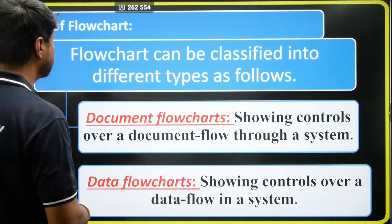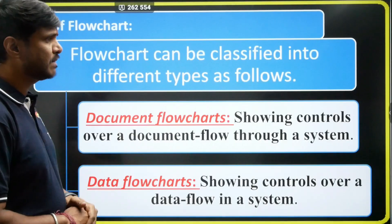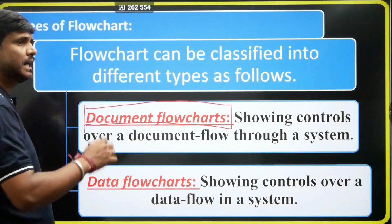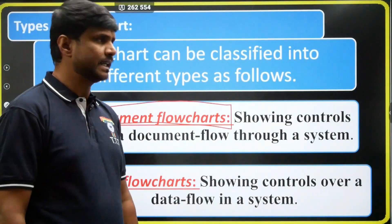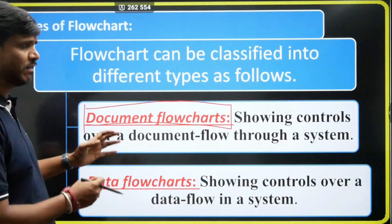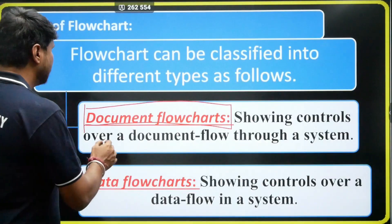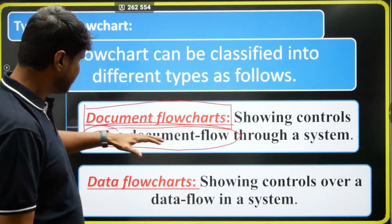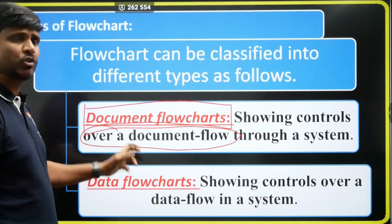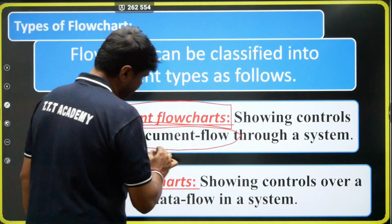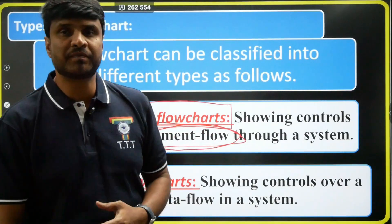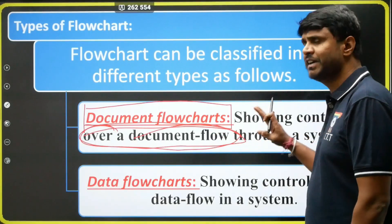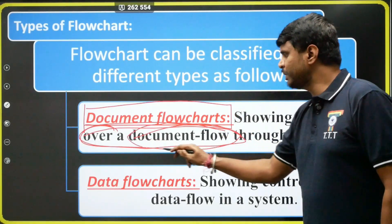First, let's discuss document flowchart. How can I define a document flowchart? In simple words, the document flowchart is always showing control over a document flow through a system. This is the definition of a document flowchart.